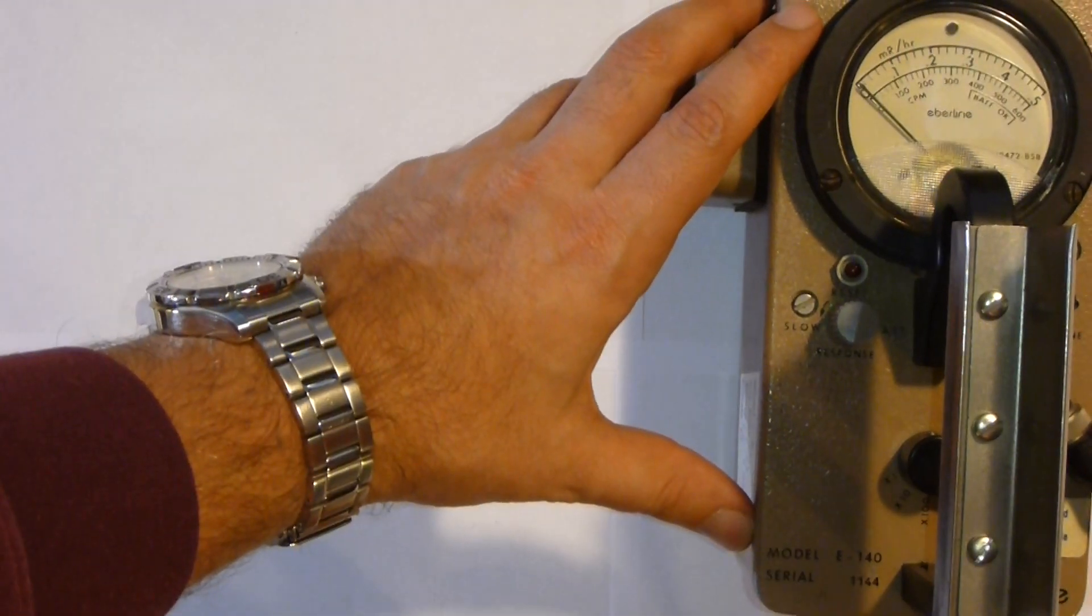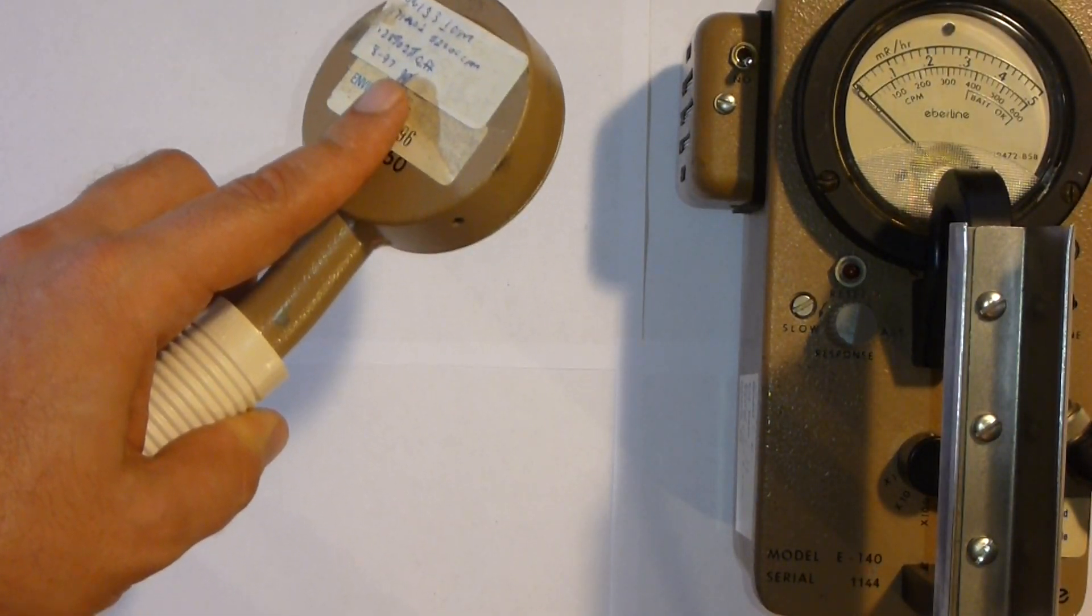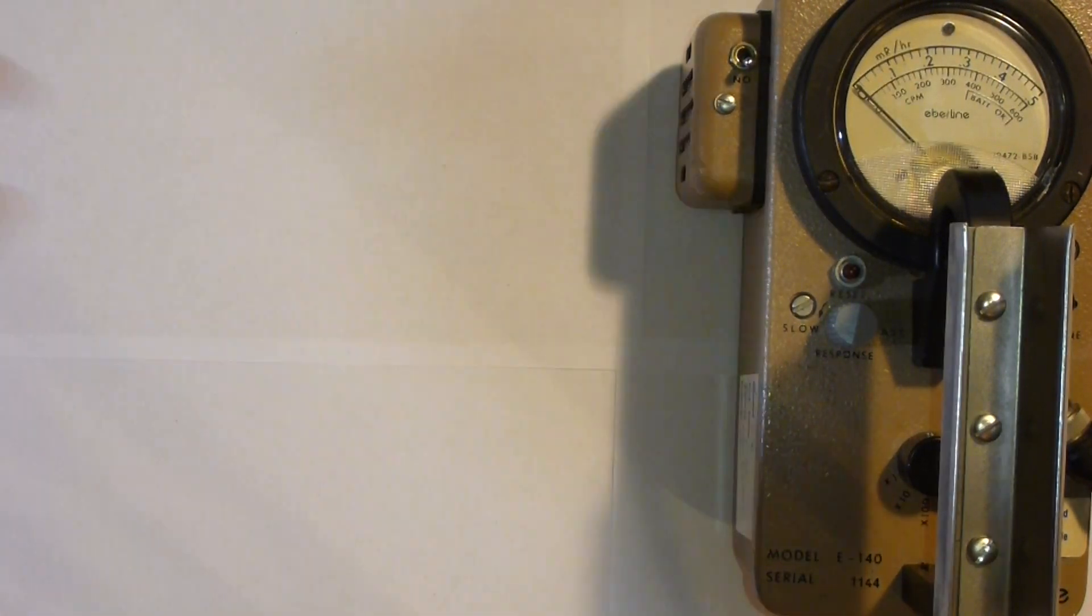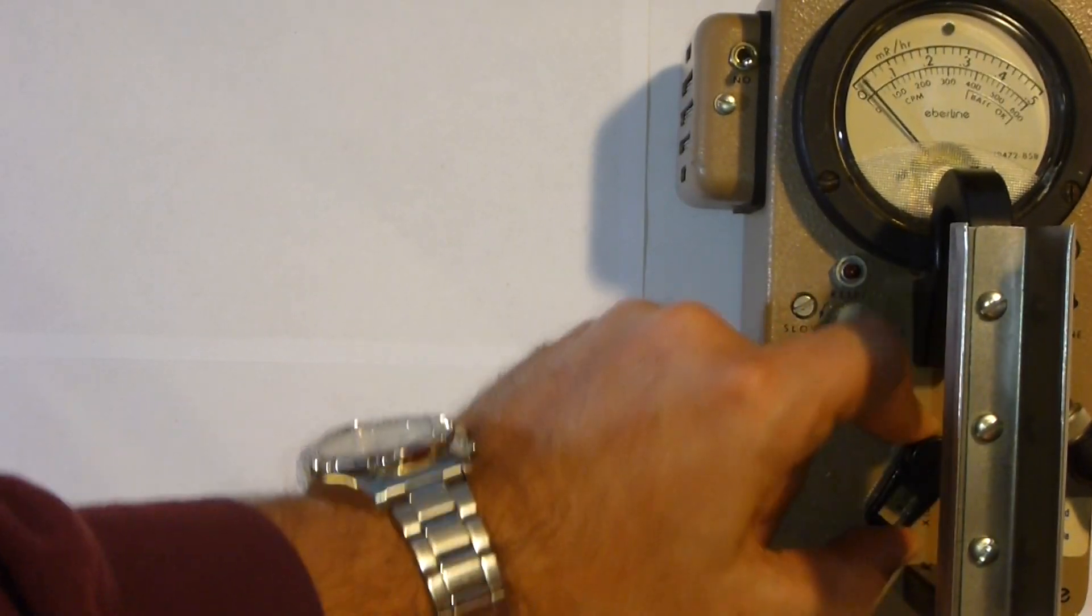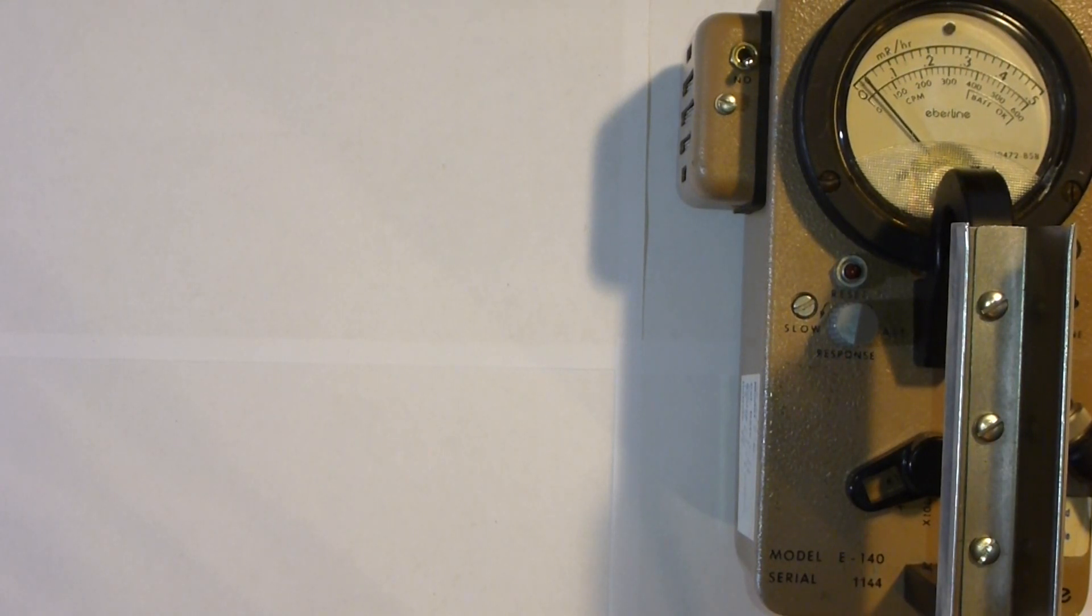This is the Geiger counter I'm using. It has a pancake probe, which in theory is sensitive to beta and gamma radiation. So I'm going to go ahead and switch this on and put the scale at 1 to 1. You'll hear it click now and then. That's just registering normal background radiation.